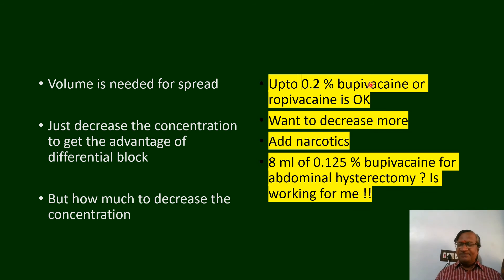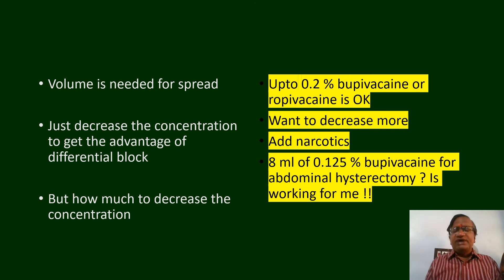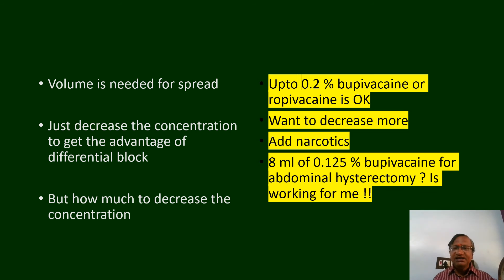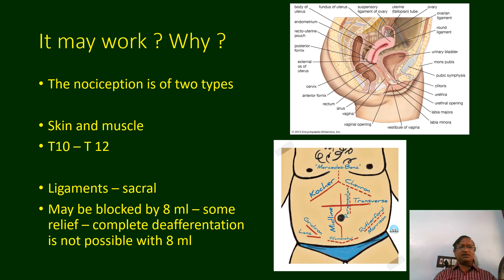0.2% bupivacaine or ropivacaine is acceptable for infusions; if you want to decrease more, add narcotics. Some people say 6 ml of 0.1% bupivacaine is working for them — yes, it will work once you understand the nociception. For hysterectomy, the skin incision is at T9; the peritoneum and deeper nociception is a minimum of T10.